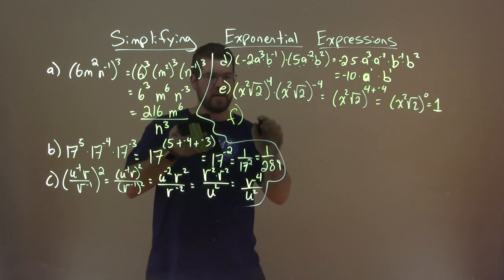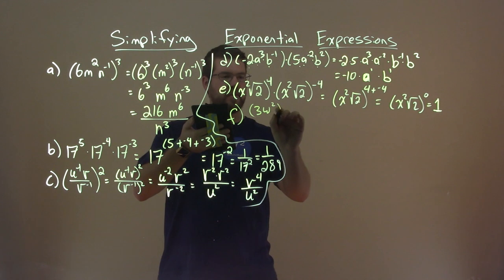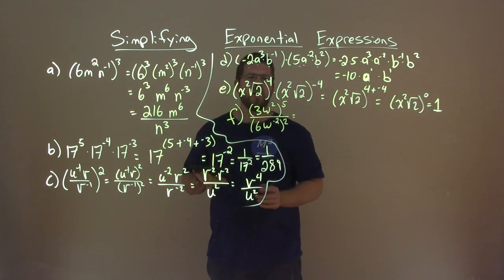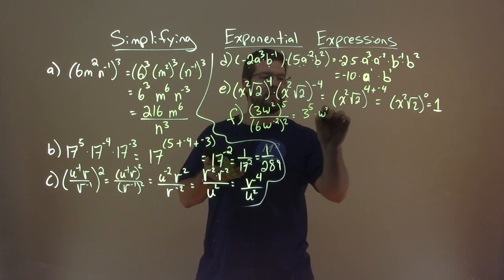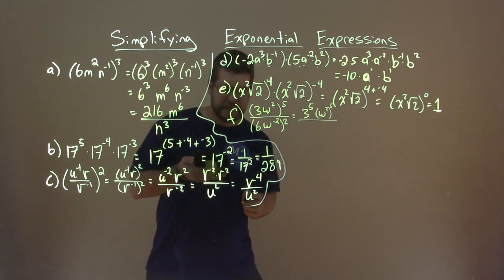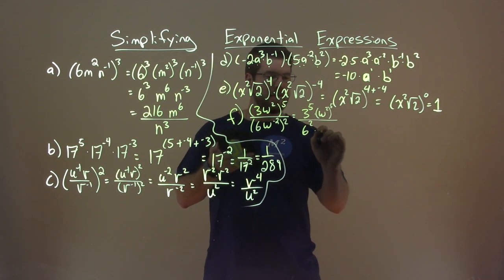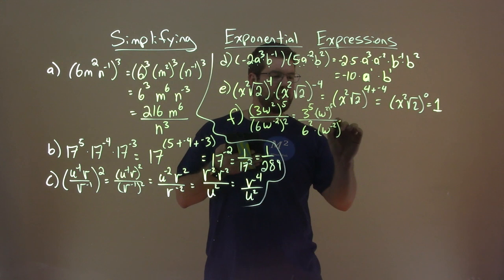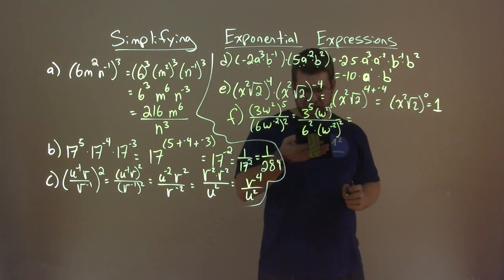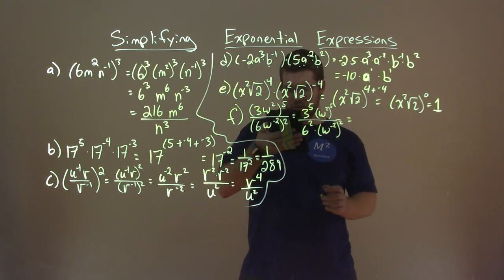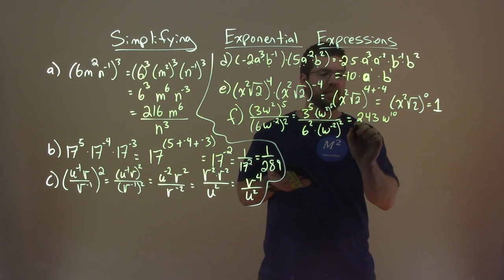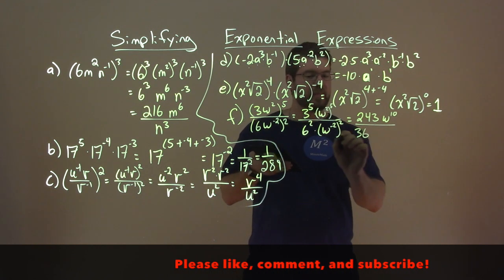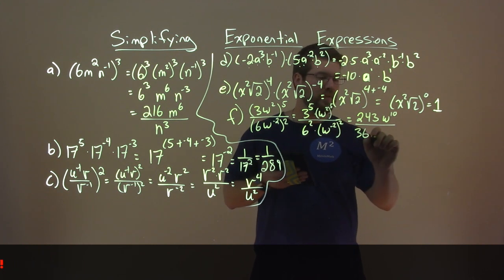And lastly, let's get f. 3w squared all to the fifth power over 6w to the negative 2 power, squared. This fifth power can be applied to each base with its exponent. So we have 3 to the fifth power times w squared to the fifth power over 6 squared times w to the negative 2 power to the second power. 3 to the fifth is 243, and 2 times 5 is 10, so we have w to the tenth. 6 squared is 36, and negative 2 times 2 is negative 4, so we have w to the negative 4.